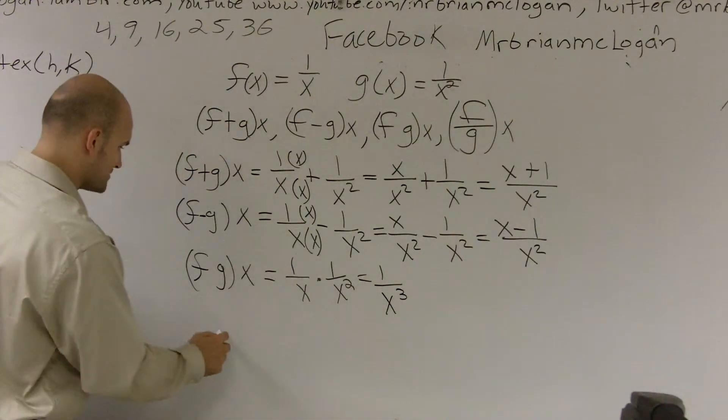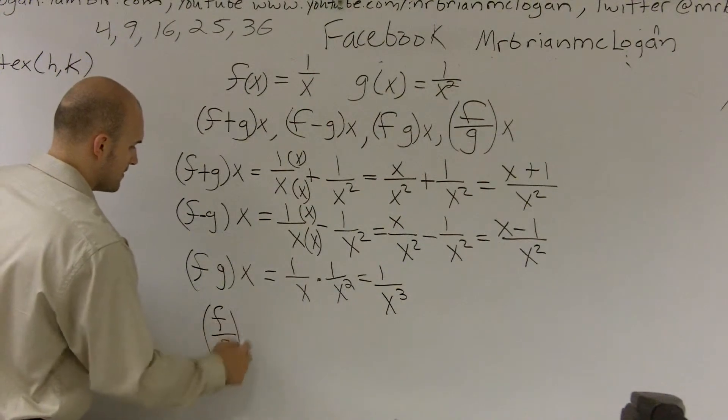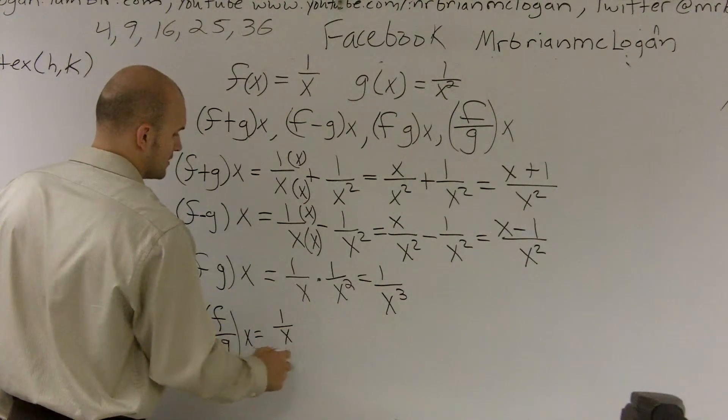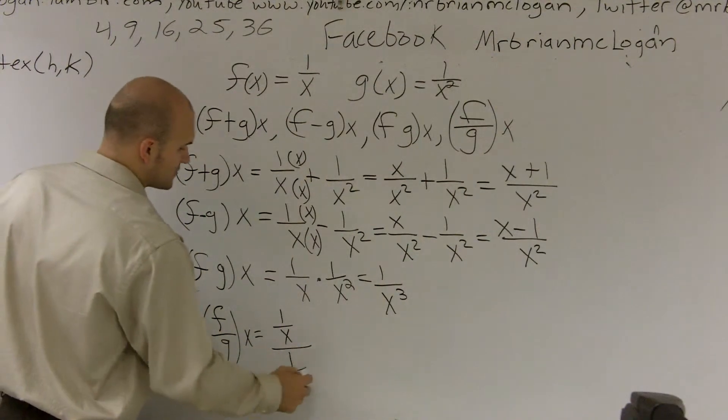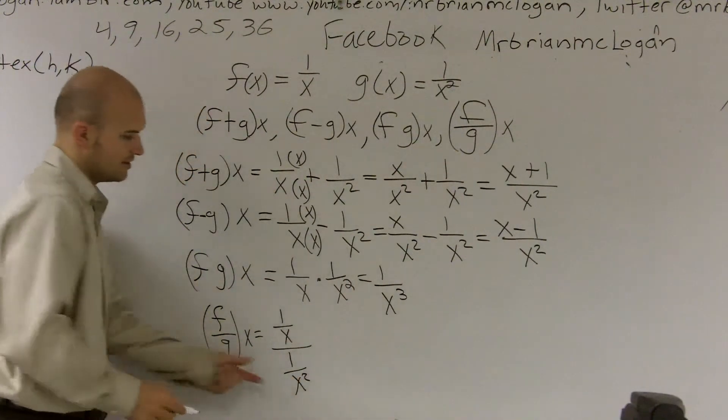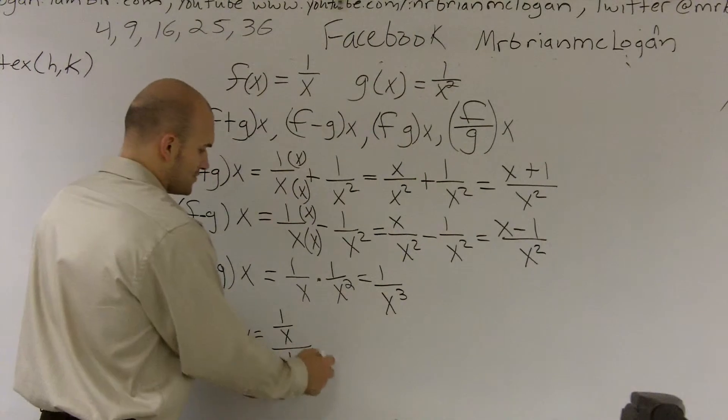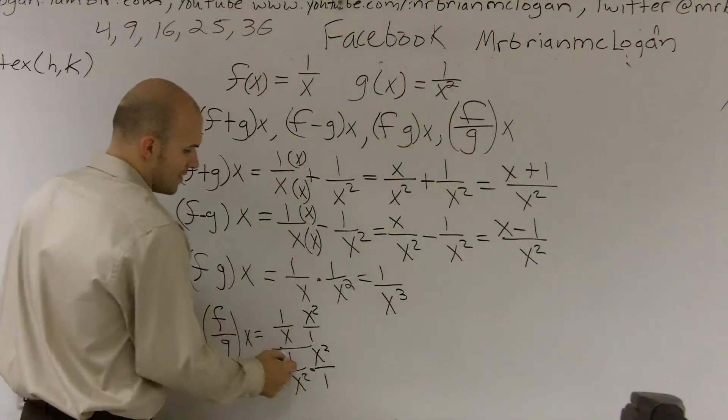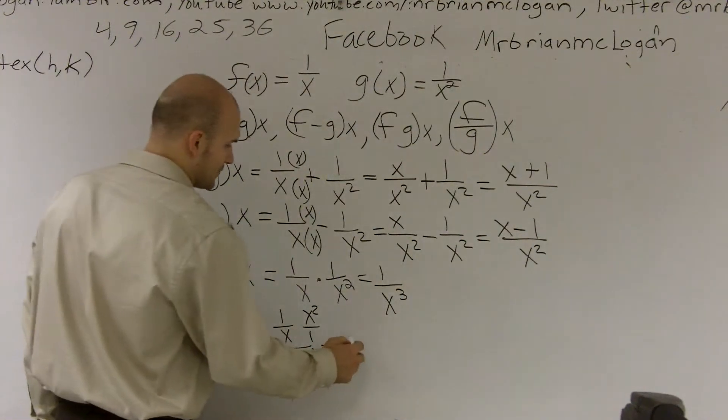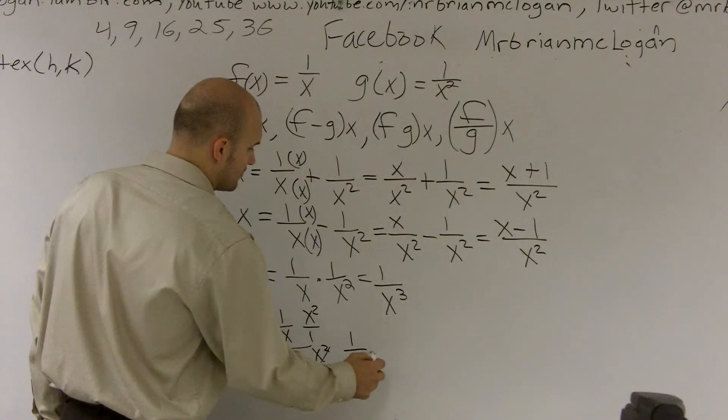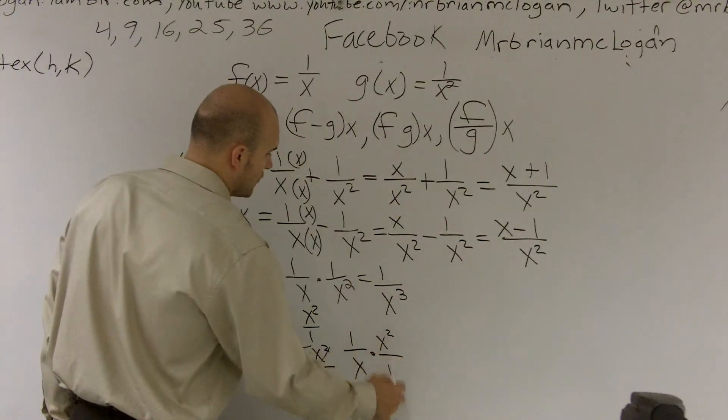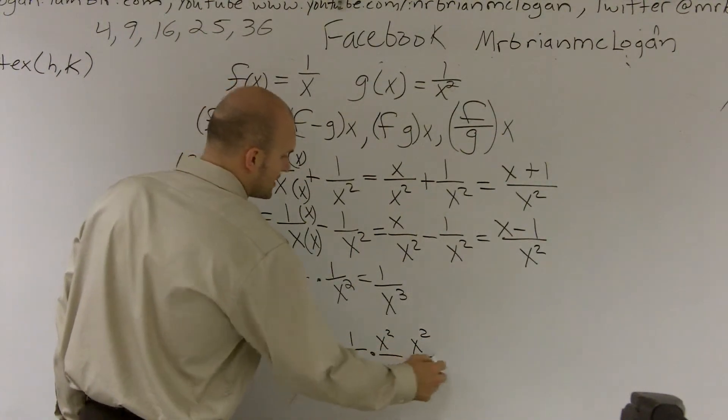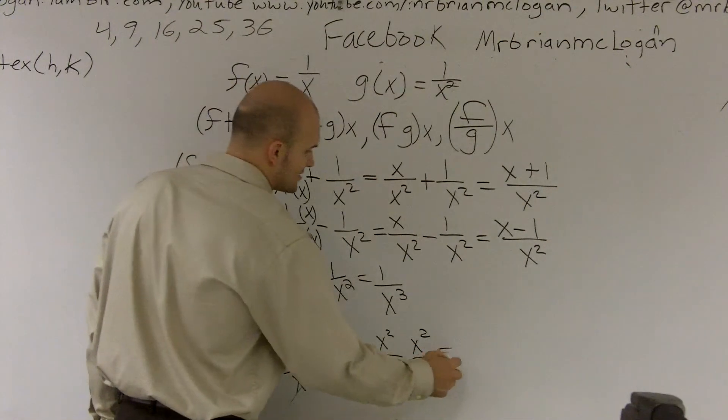And finally, our last one is f over g of x equals f of x, which is 1 over x, times g of x, which is 1 over x squared. To get our fraction off the bottom, I have to multiply by my reciprocal. That cancels to 1. So I'm left with 1 over x multiplied by x squared over 1. 1 times x squared is x squared. x times 1 is x. This cancels out to give me x.